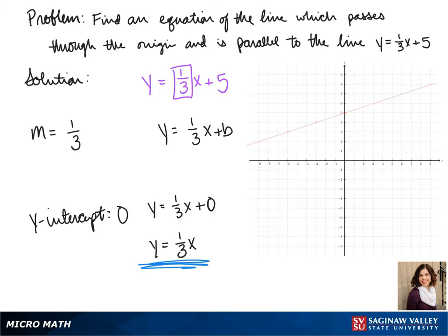In the light red here, we can see the line that it's parallel to, y equals 1/3 x plus 5. To plot our line, we can put a point at the origin, then go up 1 and over 3, and that is what our line looks like.